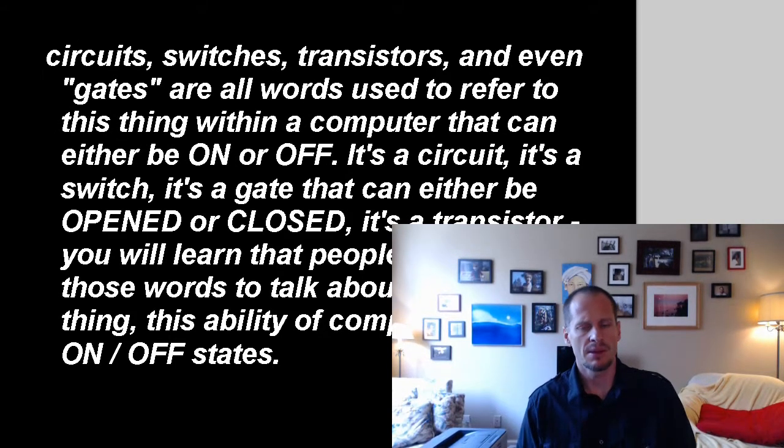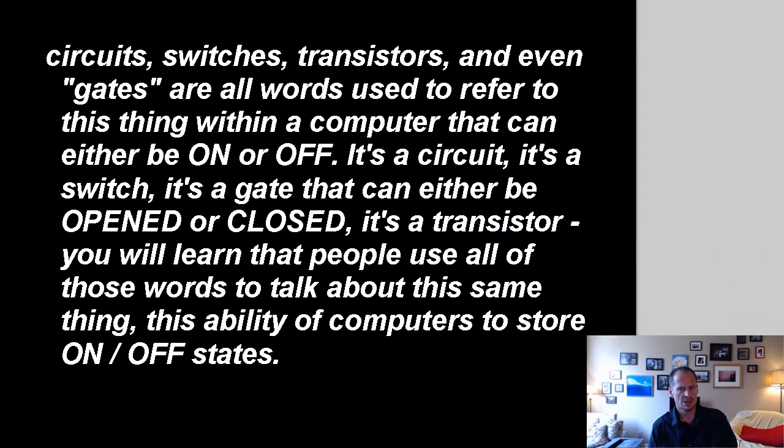So I just typed this up so that you could kind of take a look at it. That circuits, switches, transistors, and even gates are all words used to refer to this thing within a computer that can be either on or off. It's a circuit. It's a switch. It's a gate that can either be open or closed. It's a transistor. You will learn that people use all those words to talk about the same thing. This ability of computers to store on off states.